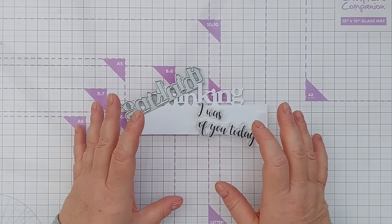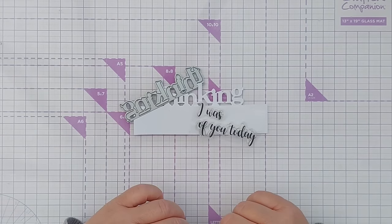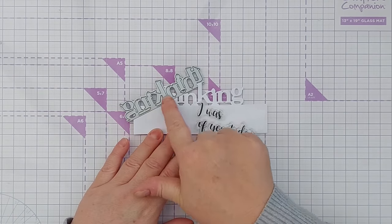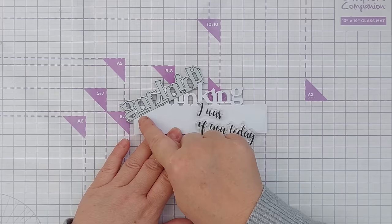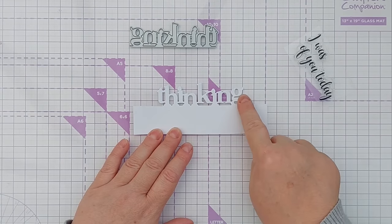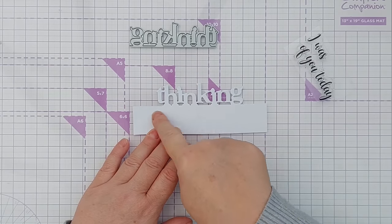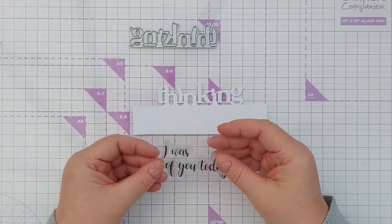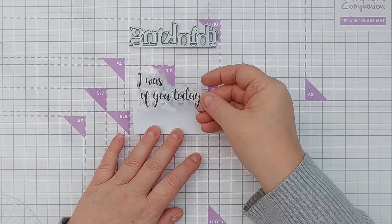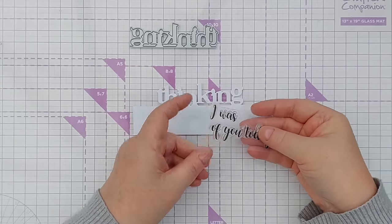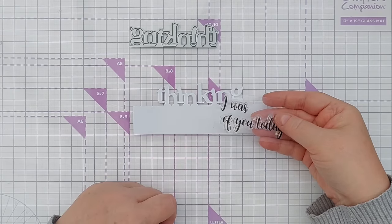So the die cuts the word 'thinking' but not along the bottom, so when you cut it you get the word thinking still attached to the card that you've cut it from. You also get a stamp that you can use. This one is supposed to be 'I was thinking of you today' but you could mask off the 'today' if you want and just have 'I was thinking of you'.